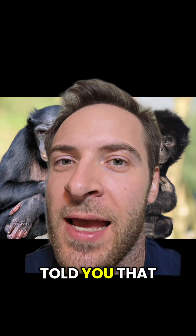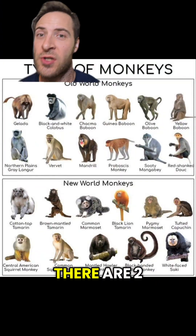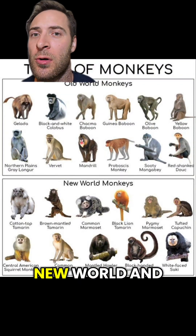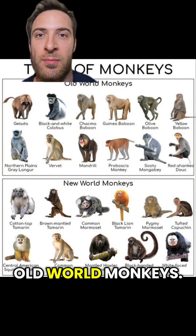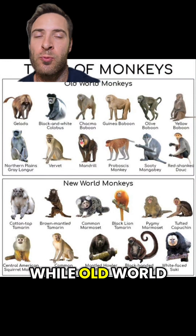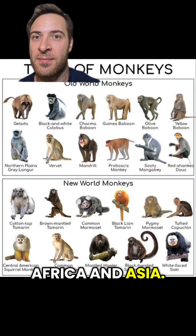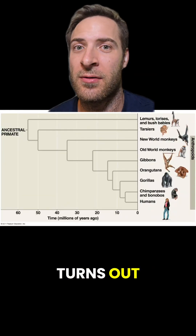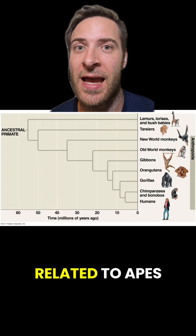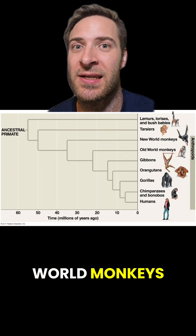What if I told you that technically, apes are monkeys? There are two basic kinds of monkey: new world and old world monkeys. New world monkeys live in the Americas, while old world monkeys live in Africa and Asia. And as it turns out, old world monkeys are more closely related to apes than to new world monkeys.